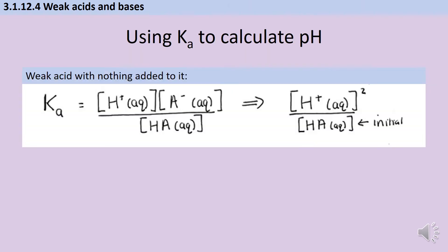If you're working with a strong acid, calculating pH is straightforward. For a one molar solution of hydrochloric acid, you can assume a one molar solution of hydrogen ions because all of the acid has dissociated. But for a weak acid, you can't make that same assumption, because not all of the acid will have dissociated, so there isn't a one-to-one ratio between the acid and the hydrogen ions. This is why we need the acid equilibrium constant Ka.